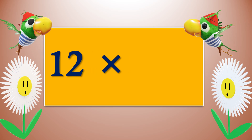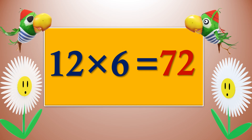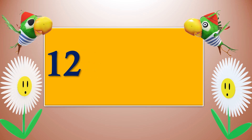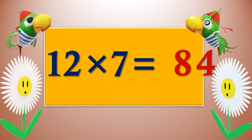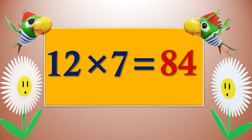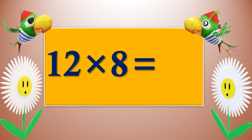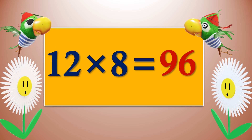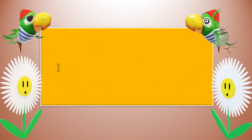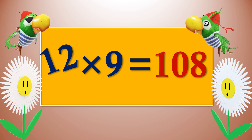Twelve sixes are seventy-two. Twelve sevens are eighty-four. Twelve eights are ninety-six. Twelve nines are one hundred and eight.